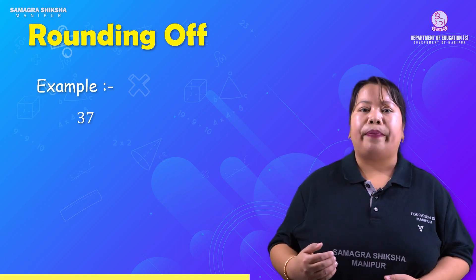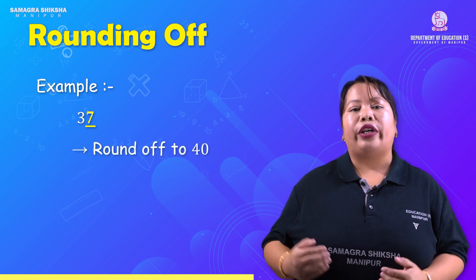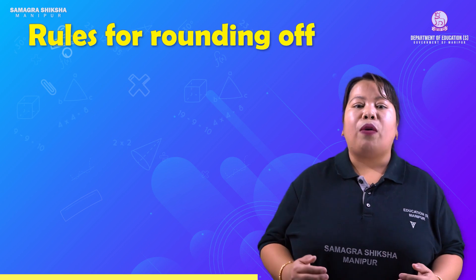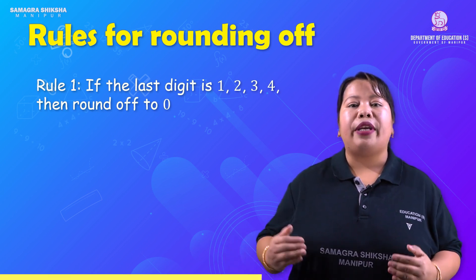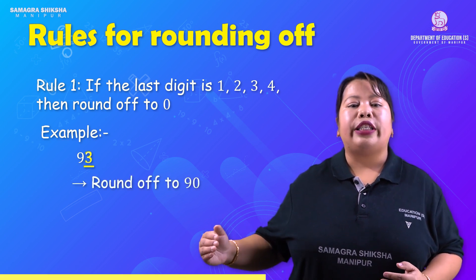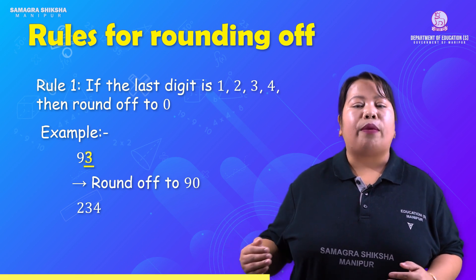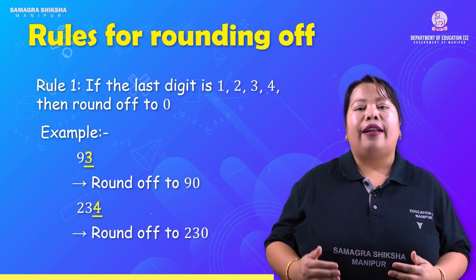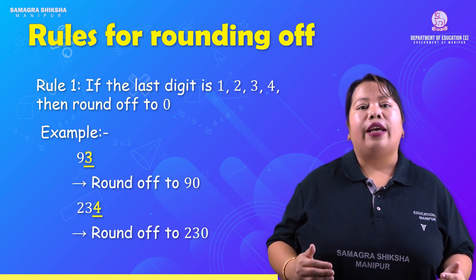Example: the number 37. When the last digit from the right side is 7, it is rounded off to 40. Rule 1: if the last digit is 1, 2, 3, or 4, we round off to 0 — meaning the last digit becomes 0. For example, 93: the last digit is 3, so it is rounded off to 90. Another example: 234 — the last digit from the right is 4, so it is rounded off to 230.